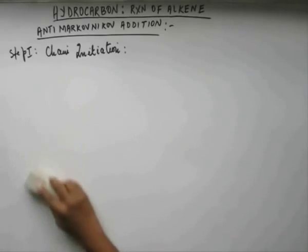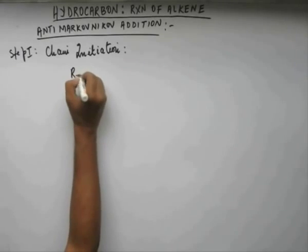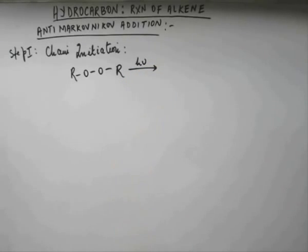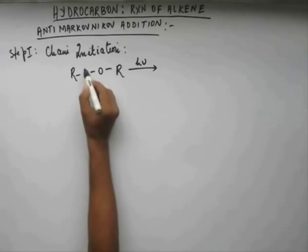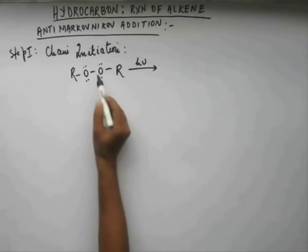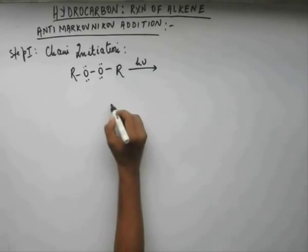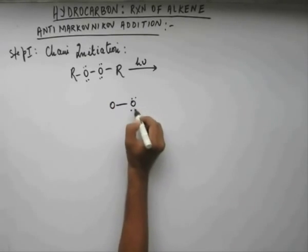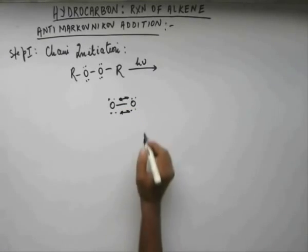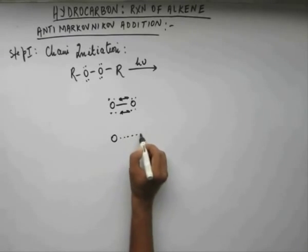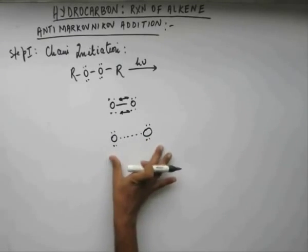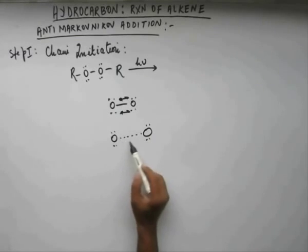So the reaction starts by peroxide. This peroxide, some amount of radiation is given on this peroxide and due to that this peroxide breaks very easily. The reason is this peroxide linkage is very weak because both oxygens have two pairs of lone pairs and there would be repulsion among them. These lone pairs will be repulsing each other and to mitigate that repulsion, oxygen would increase the distance between their nucleuses.